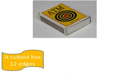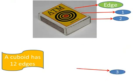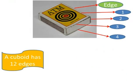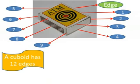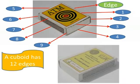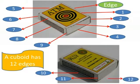A cuboid has twelve edges. An edge is where two faces meet, or a line or border at which a surface terminates. Let us count the edges: one, two, three, four, five, six, seven, eight, nine. The other matchbox is the back view of edges ten, eleven, and twelve.